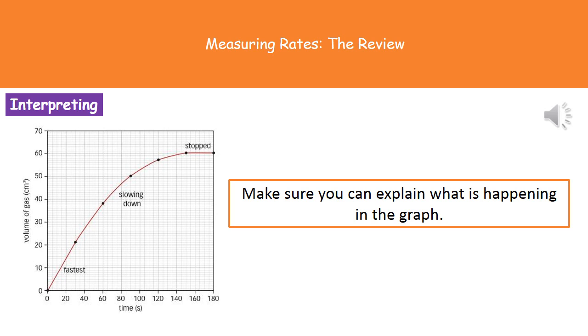And eventually, when we come up to about 150 seconds, we can see that we've got that horizontal line, which tells us that the reaction has stopped. So what we can see there by reading off, it's taken 150 seconds, and we've produced 60 centimeters cubed of gas. So just make sure that you can read those graphs to see what they're actually showing you, because they can ask you to interpret what these graphs show.